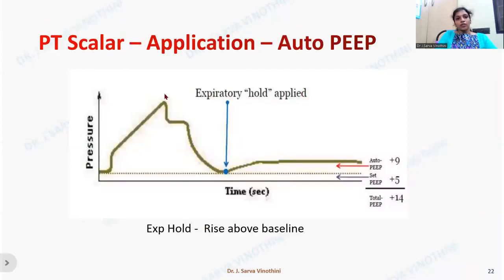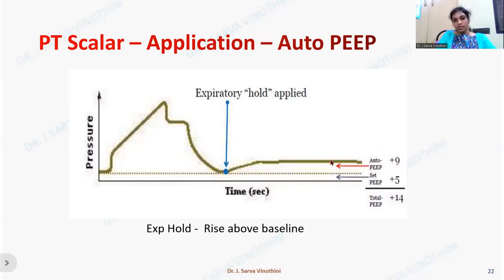Another application of the pressure-time scalar is determining auto-PEEP. Pressing the inspiratory hold button reveals plateau pressure. Pressing the expiratory hold button shows any pressure above the set PEEP — that excess is the auto-PEEP, representing air trapped in the lung that generates extra pressure above the set PEEP level.